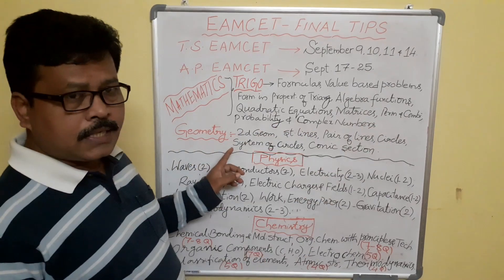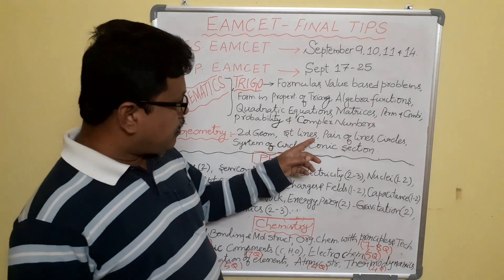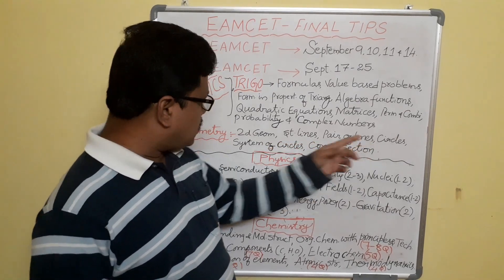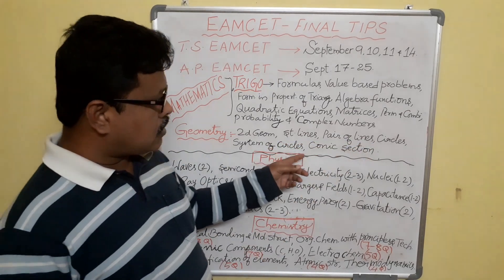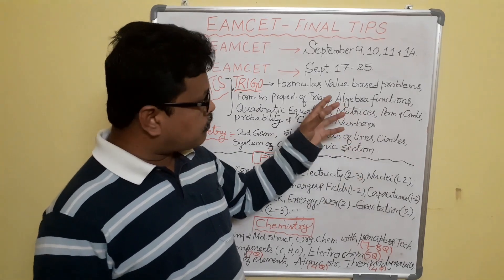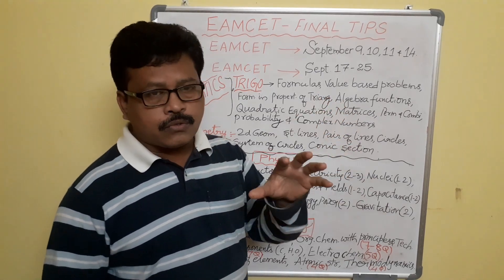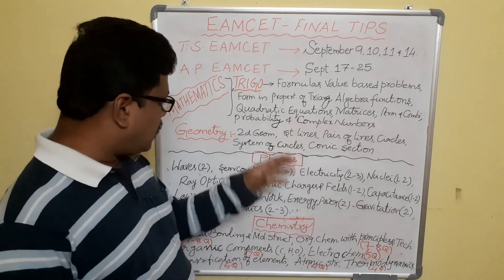In geometry, specifically 2D geometry: straight lines, pair of lines, circles, system of circles and conic sections. You have to focus more on these chapters.